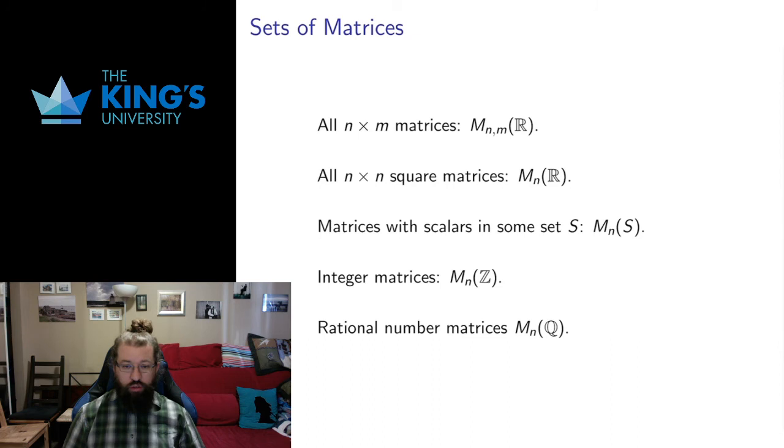Lastly, to fix some notation and talk about collections, we can talk about sets of matrices. So I want to talk about all possible n by m matrices—n rows, m columns. I use M with two subscripts, and this R here is for real numbers, which tells us the numbers we're working with. If I want all square matrices, instead of writing n times n or n comma n, I'll just write n. So there's just one subscript, and we assume the matrices are square.